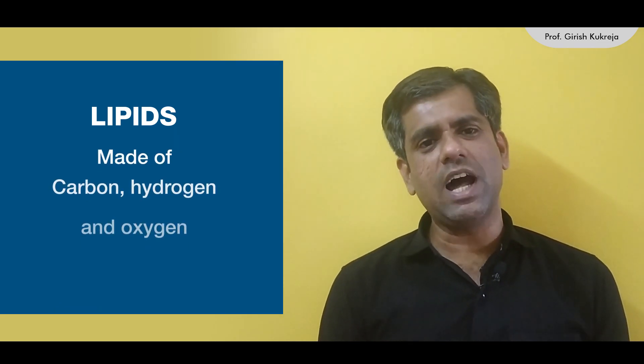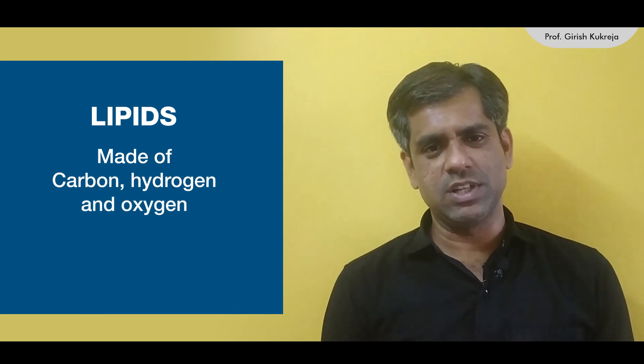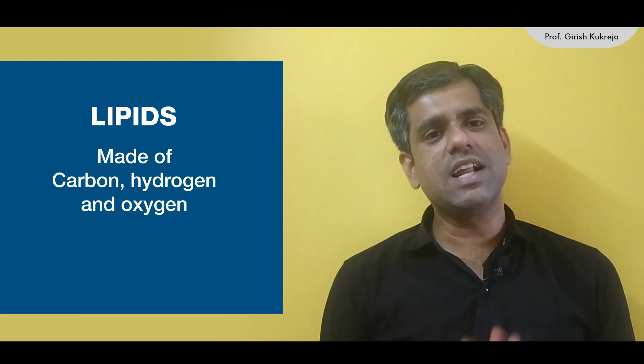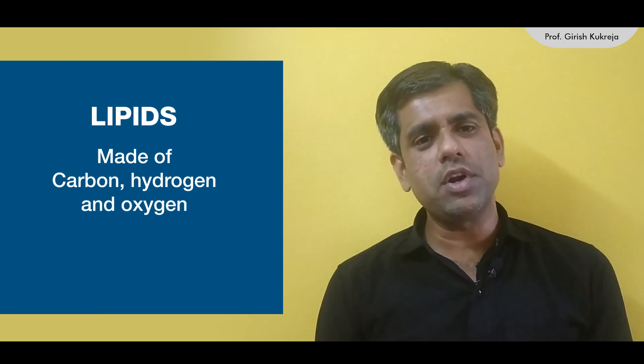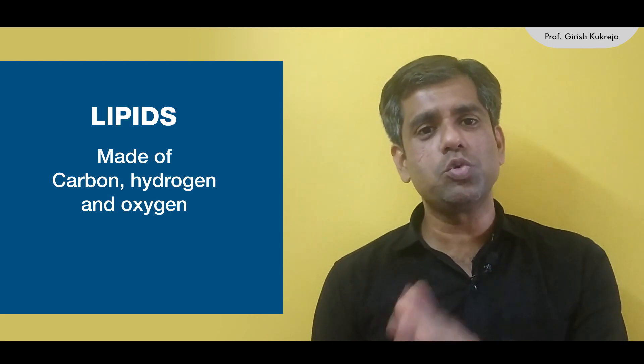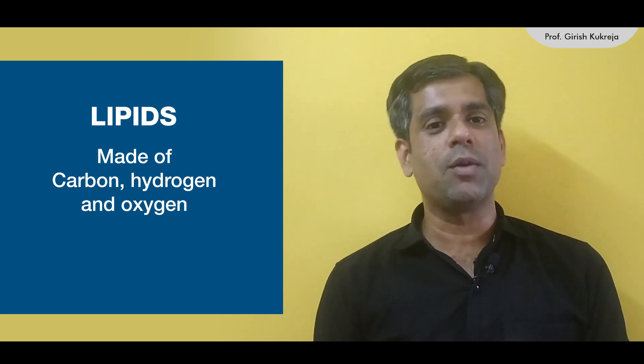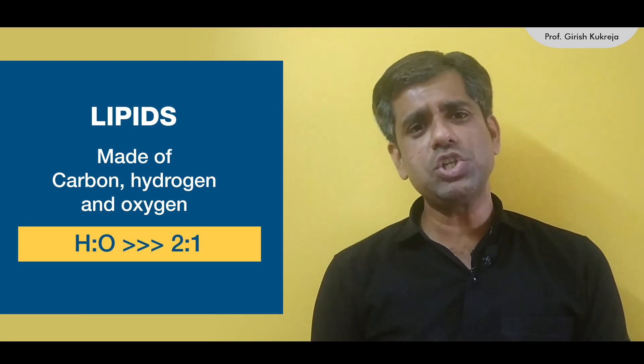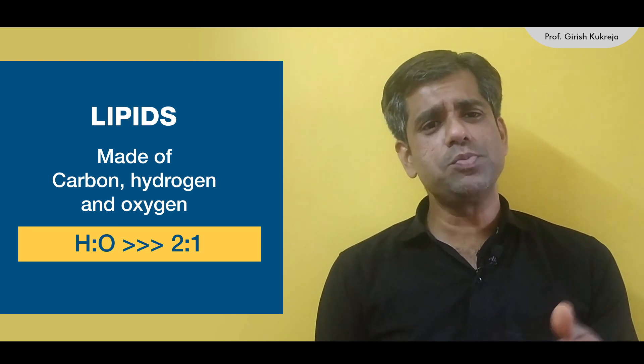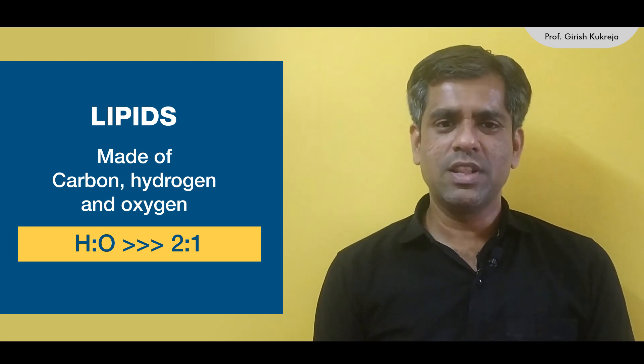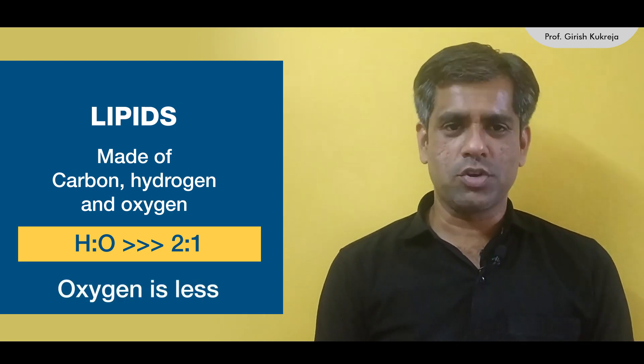Hi friends, today we'll be talking about another class of biomolecules: lipids. Chemically speaking, lipids are also made of carbon, hydrogen and oxygen. The difference being that their H to O ratio is not equal to 2:1, which we saw was for carbohydrates. The H to O ratio is much greater than 2:1 — they have very little oxygen.